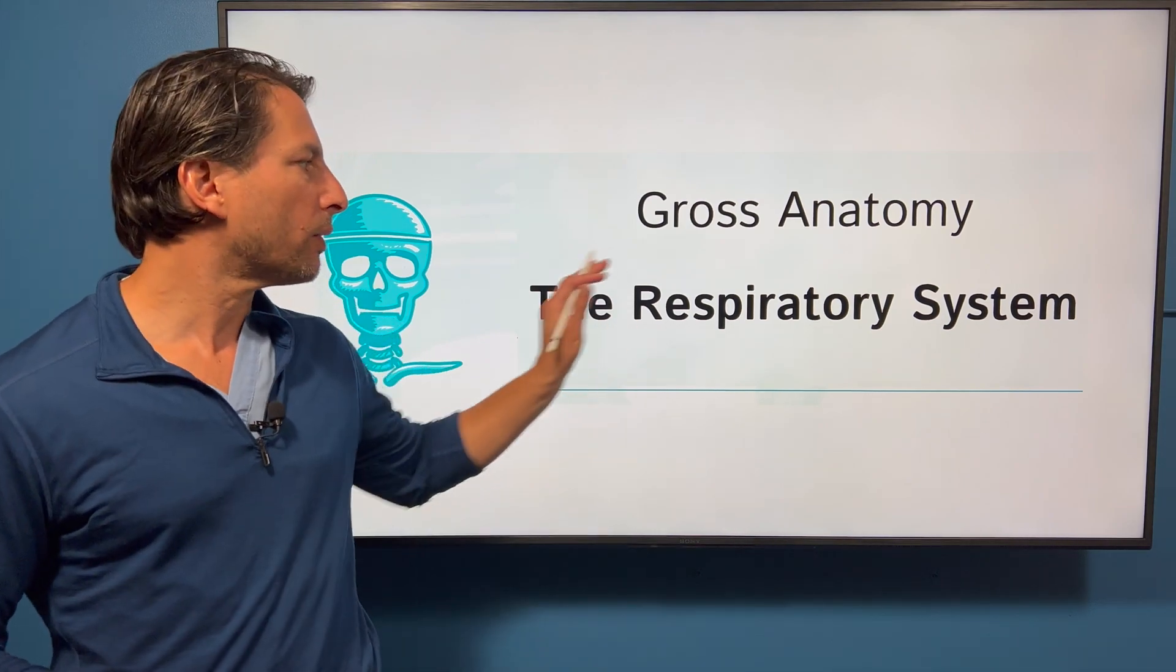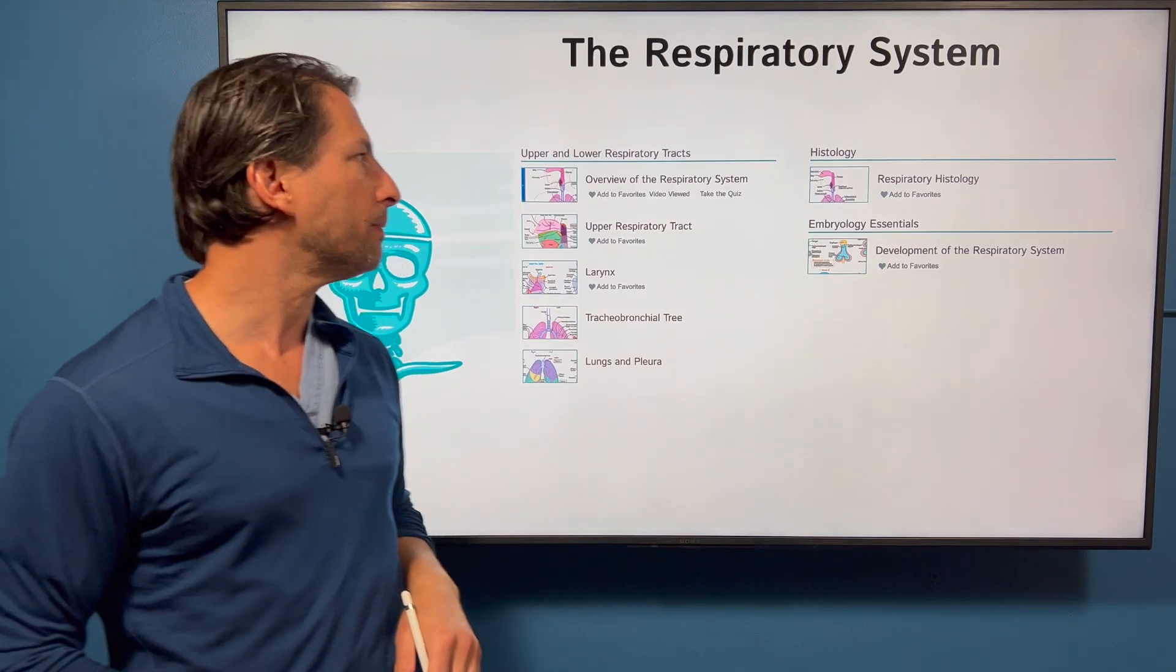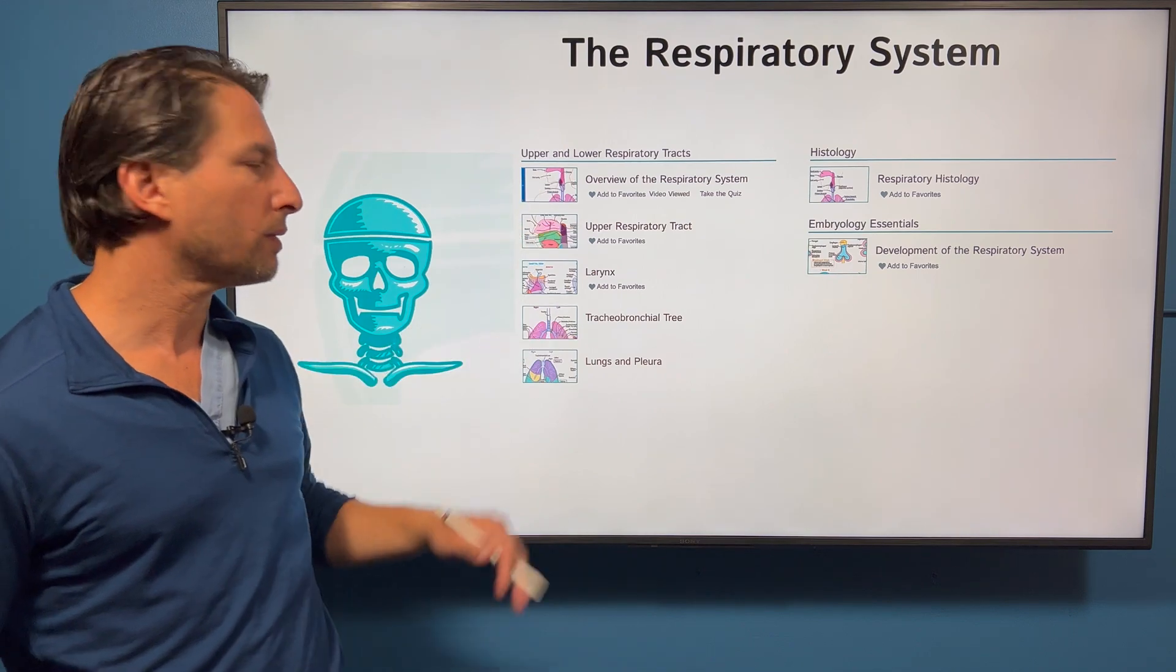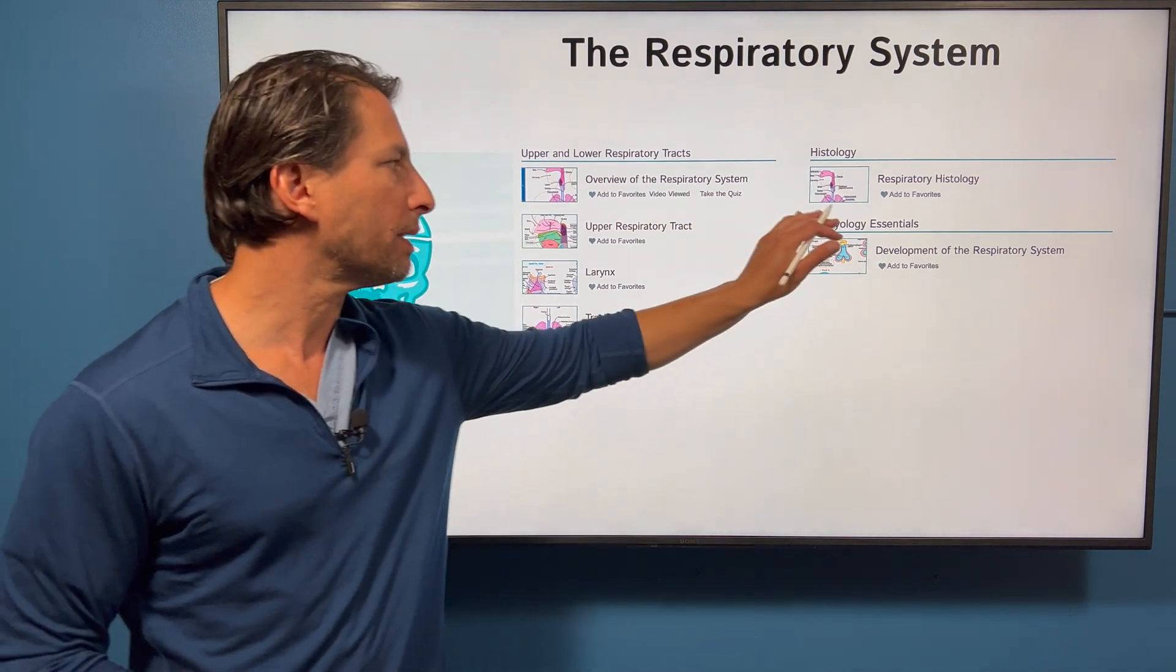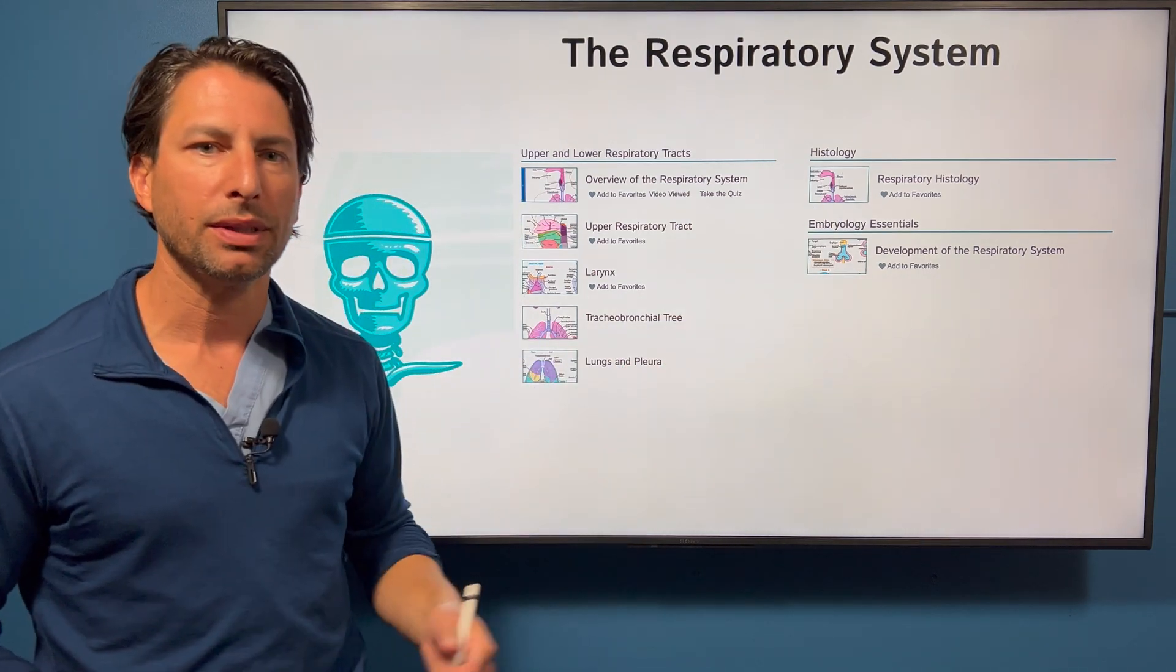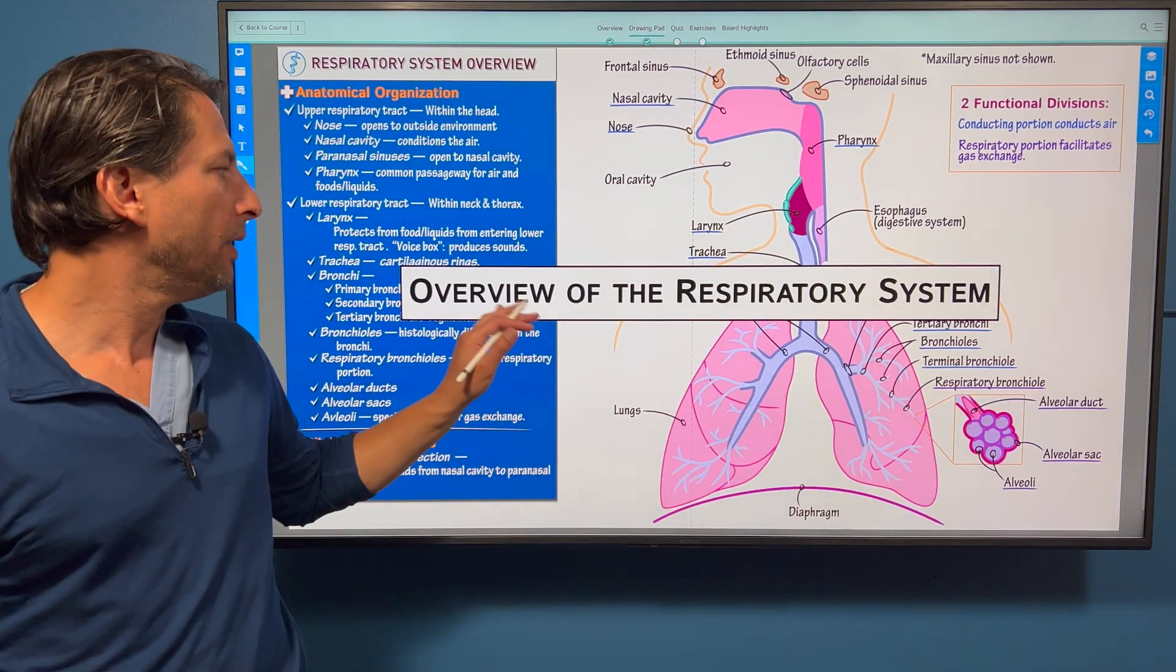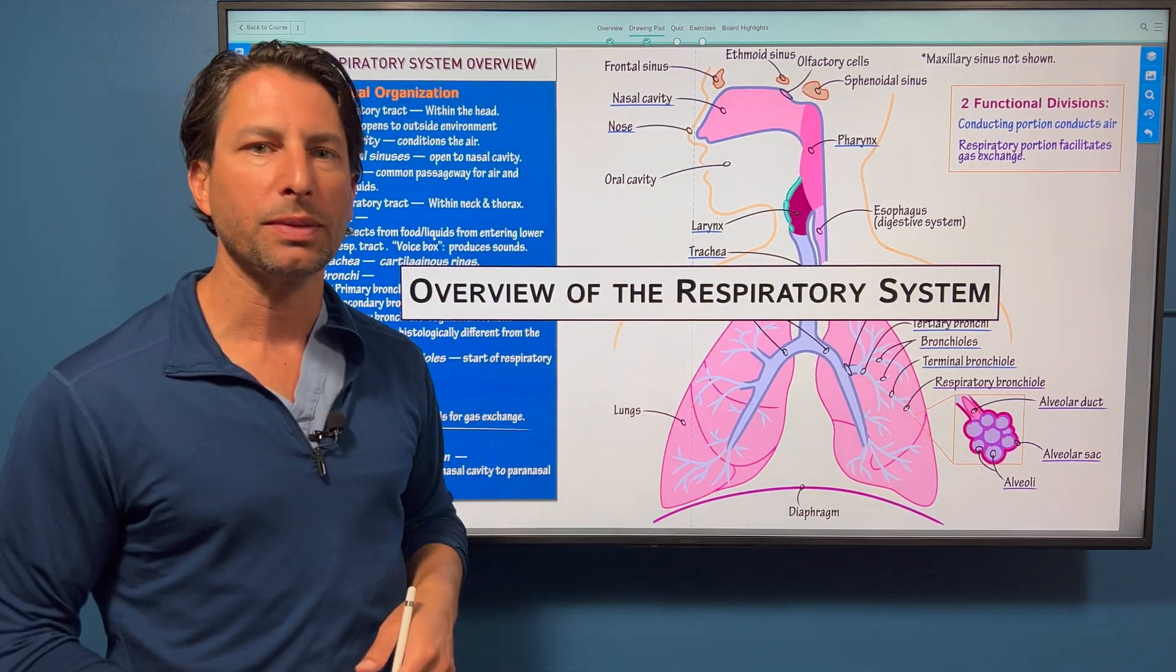Here we're going to run through a primer on gross anatomy of the respiratory system. Here are the key tutorials we'll go through. We'll skip the histology and the embryology, which is available elsewhere on the site.